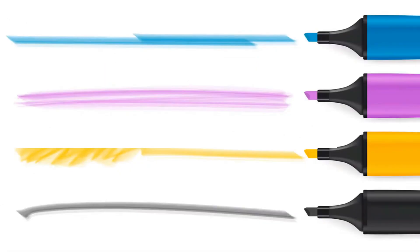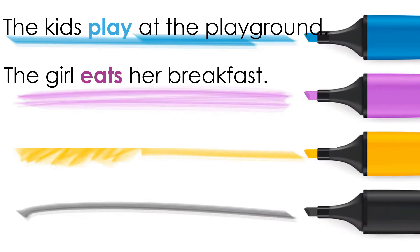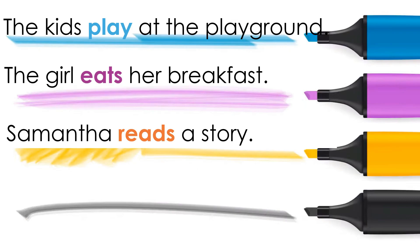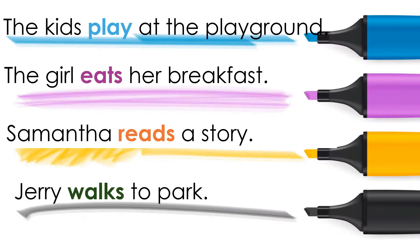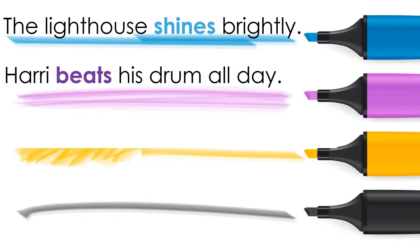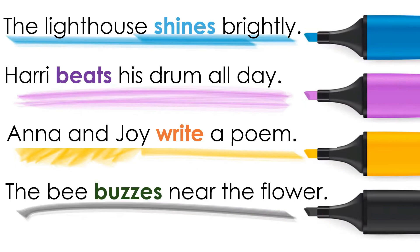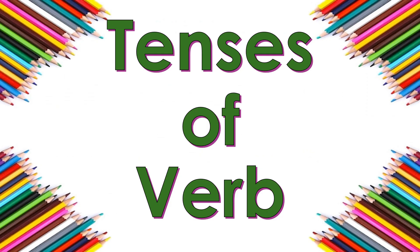Use the verb in the sentence. The kids play at the playground. The girl eats her breakfast. Samantha reads a story. Jerry walks to park. The lighthouse shines brightly. Harry beats his drum all day. Anna and Joy write a poem. The bee buzzes near the flower.